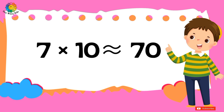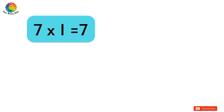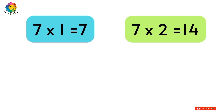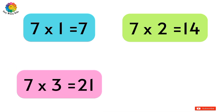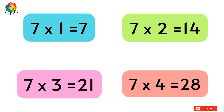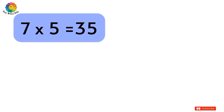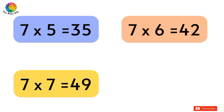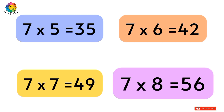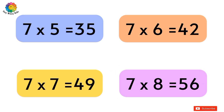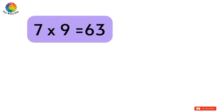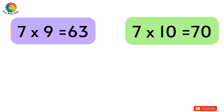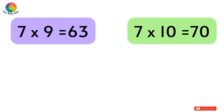Let's count again. Seven ones are seven. Seven twos are fourteen. Seven threes are twenty-one. Seven fours are twenty-eight. Seven fives are thirty-five. Seven six are forty-two. Seven sevens are forty-nine. Seven eights are fifty-six. Seven nines are sixty-three. Seven tens are seventy.